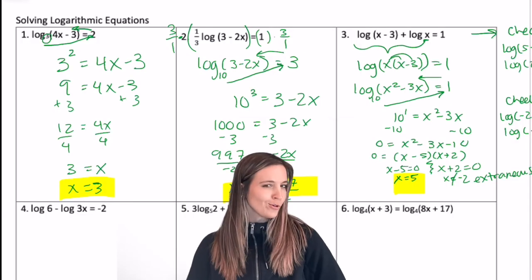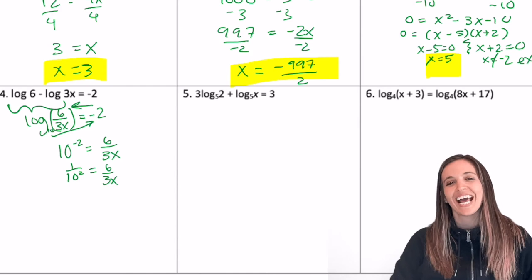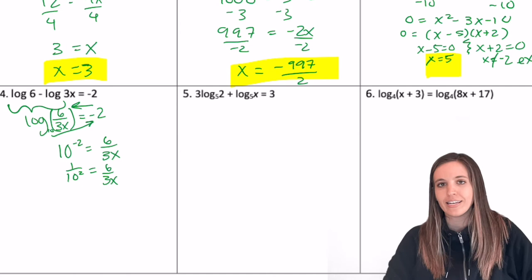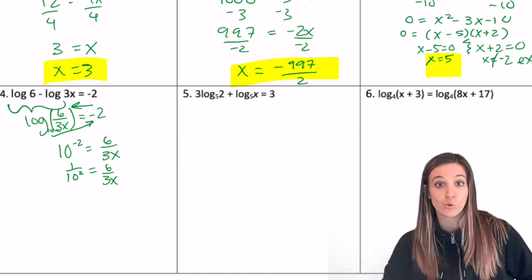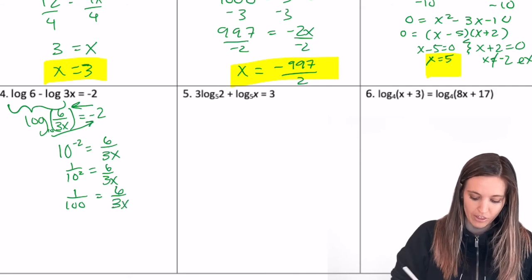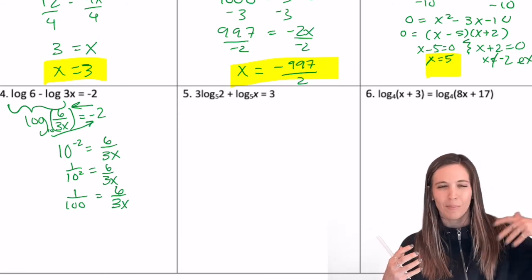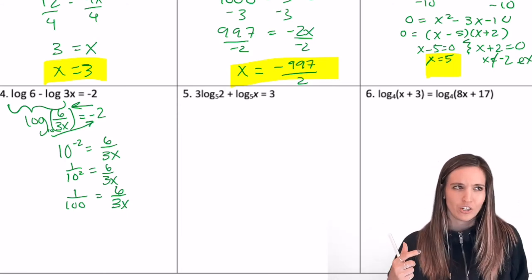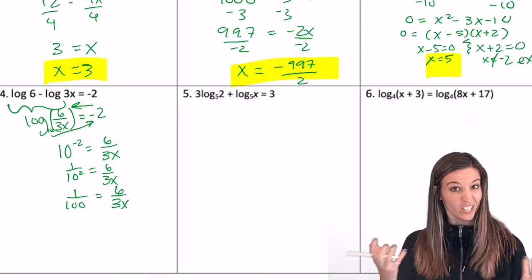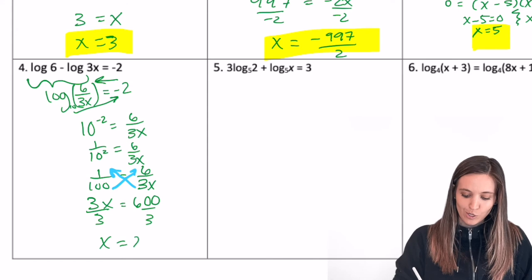At number 4, see if you can use quotient property to get this into exponential form and then come back in and check with me. So once it's in exponential form, I get 10 to the negative 2 equals 6 divided by 3x. Okay. Well, 10 to the negative 2 is just 1 divided by 10 squared. So we get 1 divided by 100 equals 6 divided by 3x. So I'd have to multiply both sides by 3x to bring that x to the numerator. But then I'm going to need to get rid of the 100 in the denominator. So I can do this all in one step, right? If I have a fraction equals a fraction, I can cross multiply. That gets me quickly to 3x equals 600. I can divide the 3 off and get x equals 200.